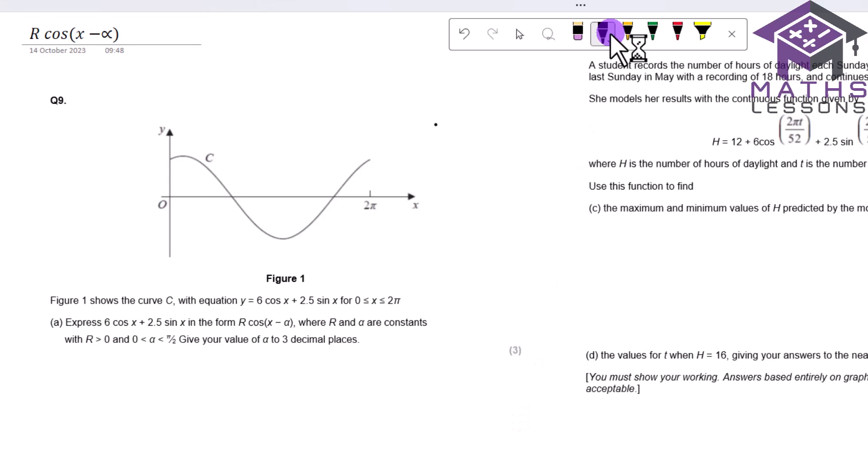So let's work out what the expansion of r cos x minus alpha is. So we write down r cos x minus alpha and that's going to give me r cos x cos alpha plus r sin x sin alpha. Because cos x minus alpha is cos x cos alpha plus sin x sin alpha. But if we multiply it all by r, we get this.